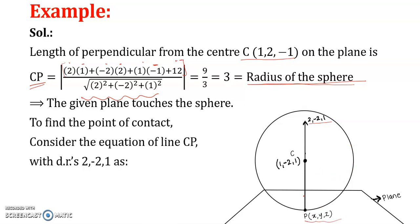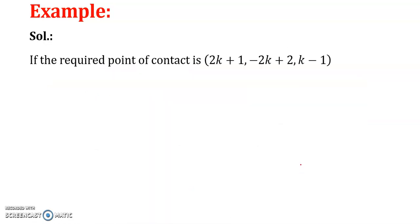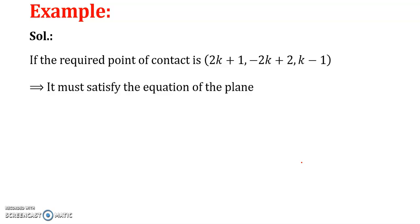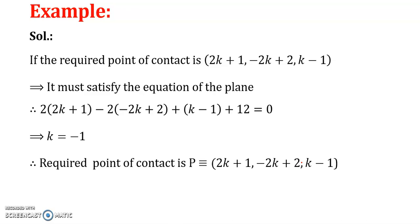Now we find the point of contact. We consider the equation of line CT with direction ratios (2, −2, 1) passing through the center (1, 2, −1): (x−1)/2 = (y−2)/(−2) = (z+1)/1 = k. Any point on this line has coordinates (2k+1, −2k+2, k−1). Since point P lies on the sphere as well as on the plane, we substitute these values for x, y, z into the equation of the plane and simplify to get k = −1. Therefore the required point of contact is (−1, 4, −2).